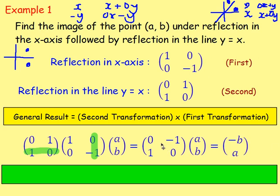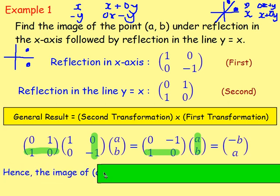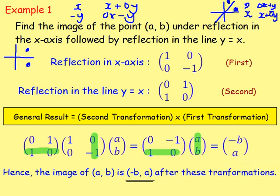Multiplying [0, −1; 1, 0] by the point [A; B]: first row: 0×A + (−1)×B = −B. Second row: 1×A + 0×B = A. This gives the matrix [−B; A], which means the image of (A, B) under these two transformations is (−B, A).